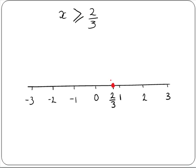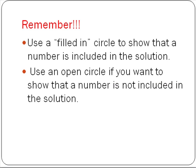Now next we use a red arrow to show that all the numbers greater than 2 thirds are included. And we use an arrow to show that this goes as far as plus infinity. So now we've graphed our solution. So what we have to remember is, use a filled in circle to show us that a number is included in the solution. And use an open circle if you want to show that a number is not included in the solution.